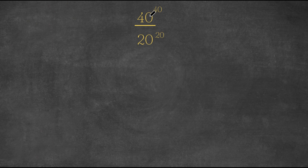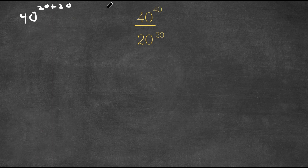I'm going to rewrite 40 to the power of 40 as 40 to the power of 20 plus 20, because 40 is equal to 20 plus 20 — so I simply rewrote 40 as 20 plus 20. And we are dividing this by 20 to the power of 20.